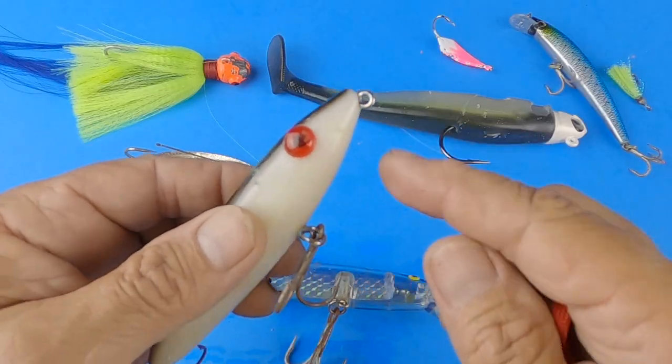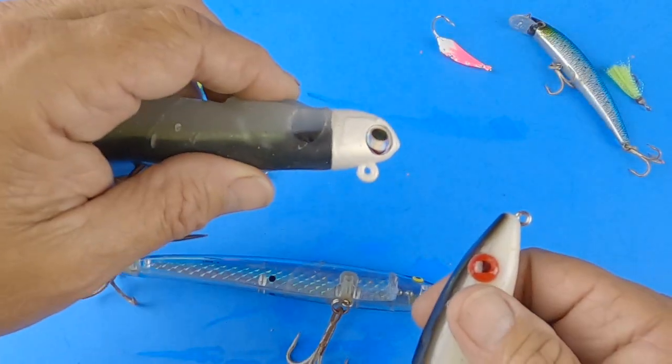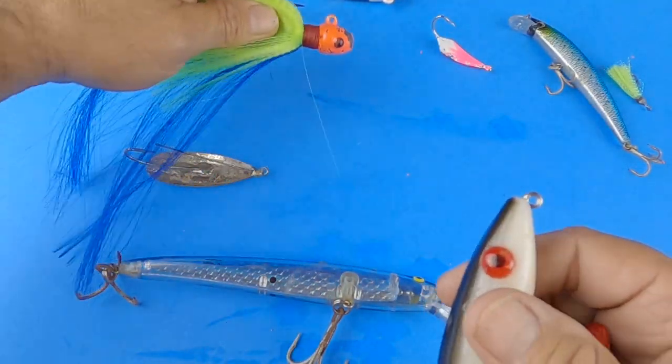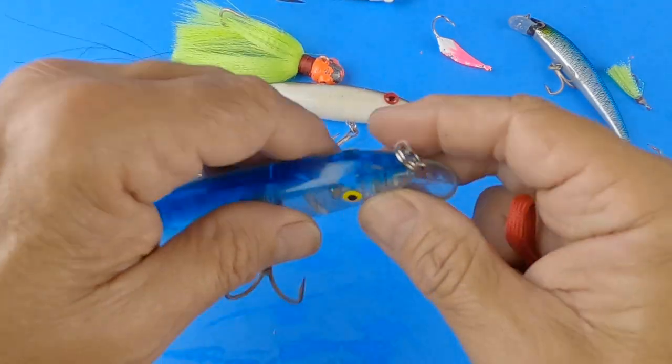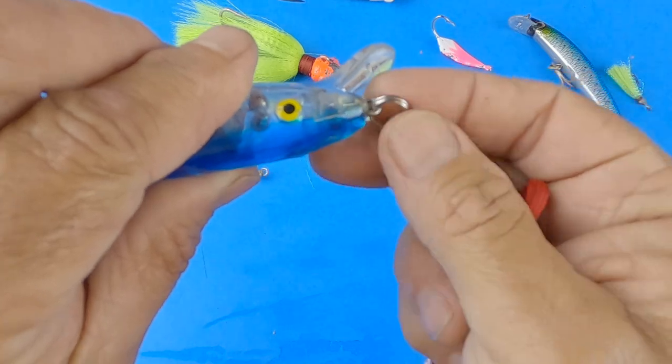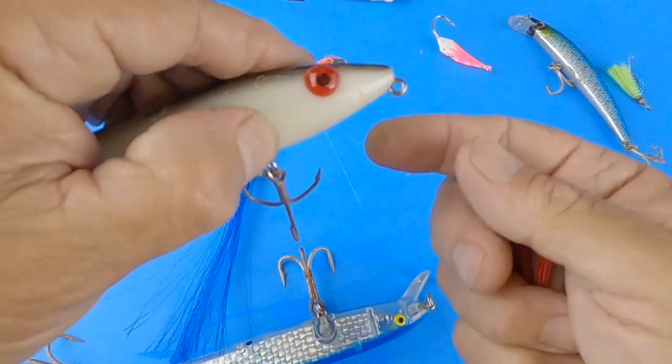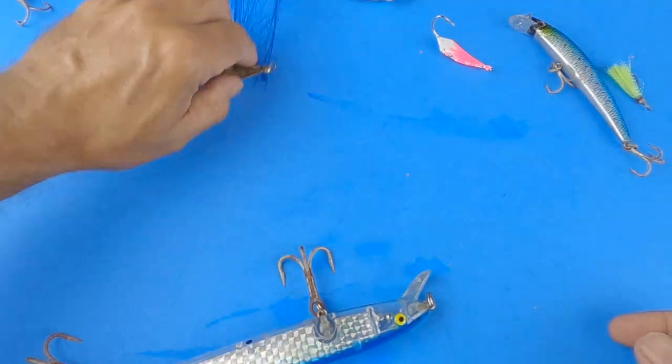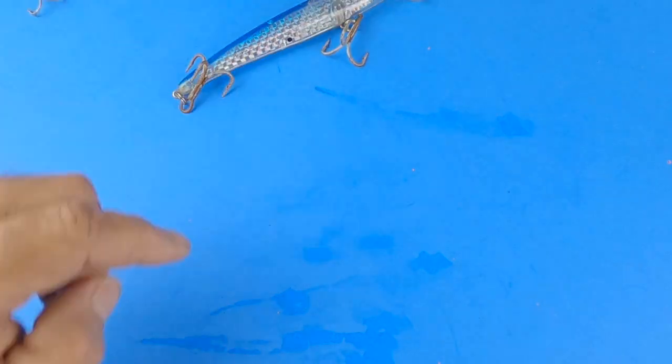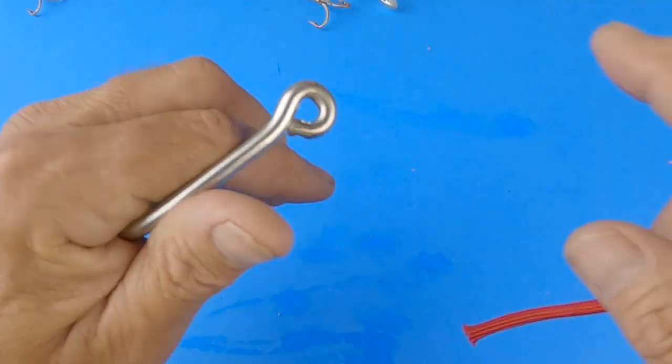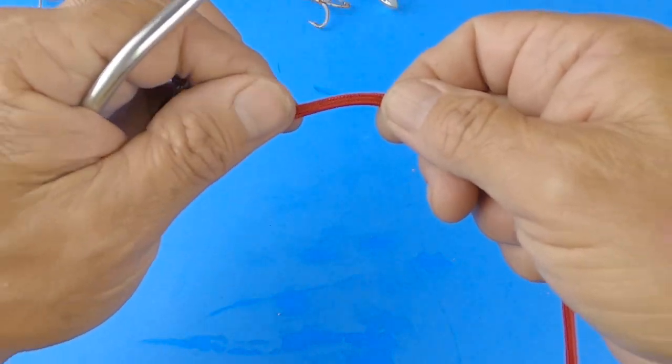This first knot is going to be your best knot that you can use for topwater lures or big swim baits or snook jigs, any lure that doesn't have a snap ring. This one's got a snap ring on it, but you notice this topwater lure right here doesn't have a snap ring on it. So to demonstrate how to tie this knot so you can see it, we're just going to pretend that this circle hook right here is the eye of a lure that doesn't have the snap ring on it.